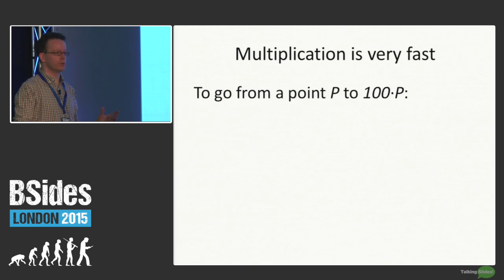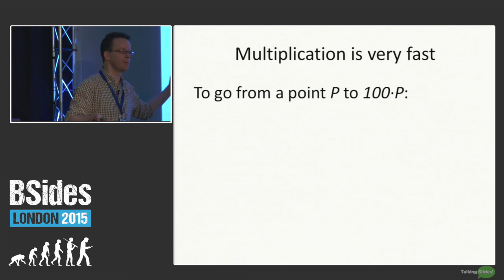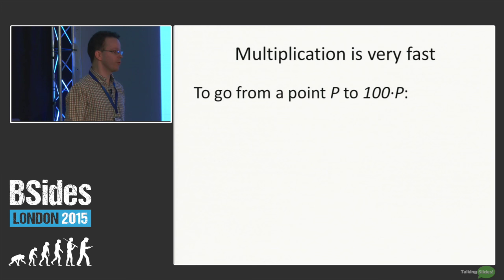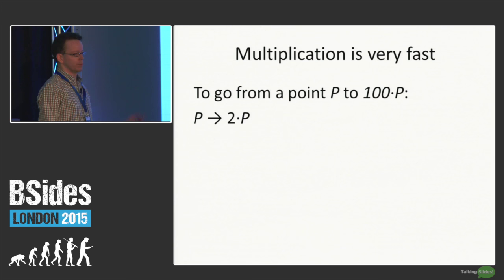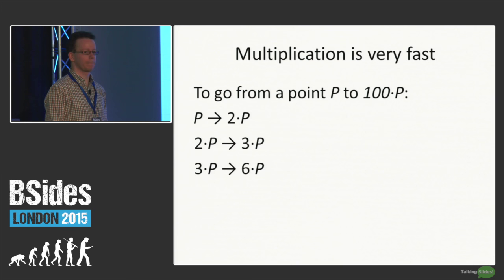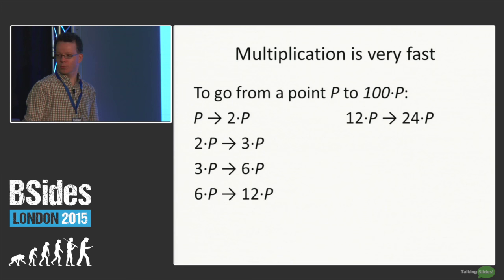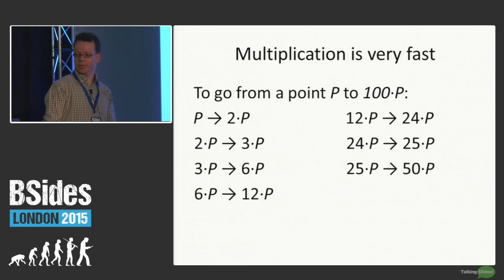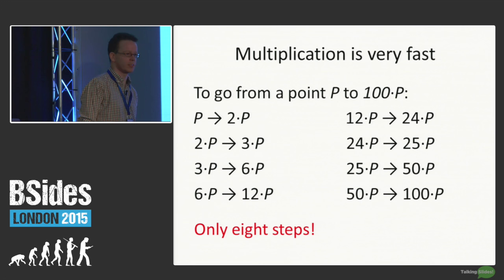It happens that multiplication by integers is very fast. If you want to get 100 times P, rather than adding P 99 times, computers can do it much faster using repeated doubling: double P to get 2P, add P to get 3P, double to get 6P, double to get 12P, double to get 24P, add P to get 25P, double to get 50P, double again to get 100P — that's eight steps rather than 99. With integers of 50 digits or more, as in elliptic curve cryptography, this is extremely fast — many orders of magnitude faster.